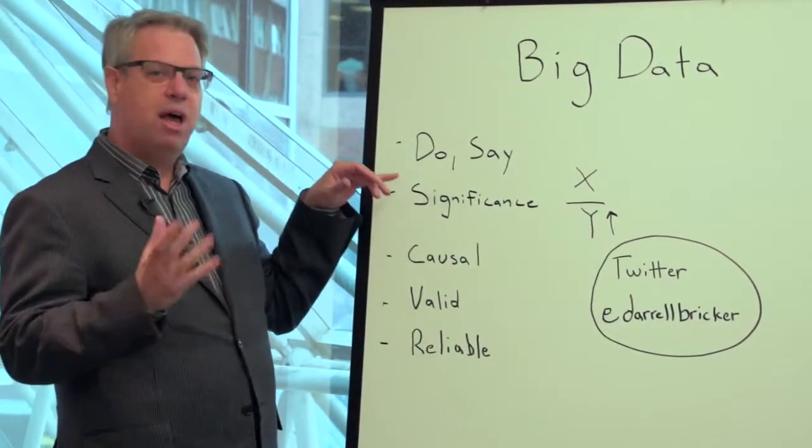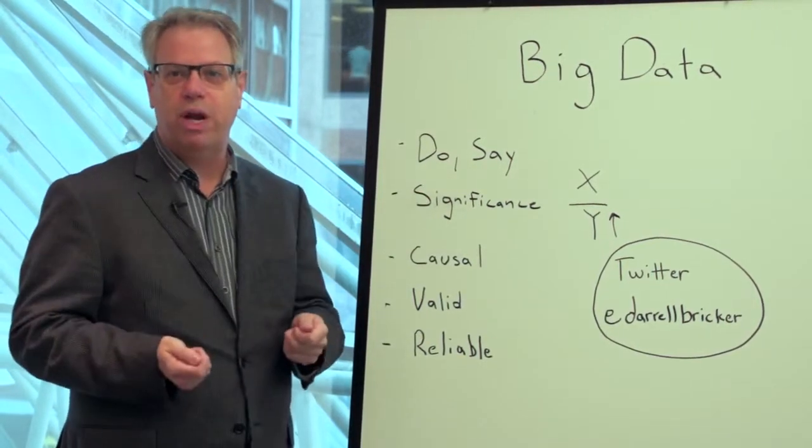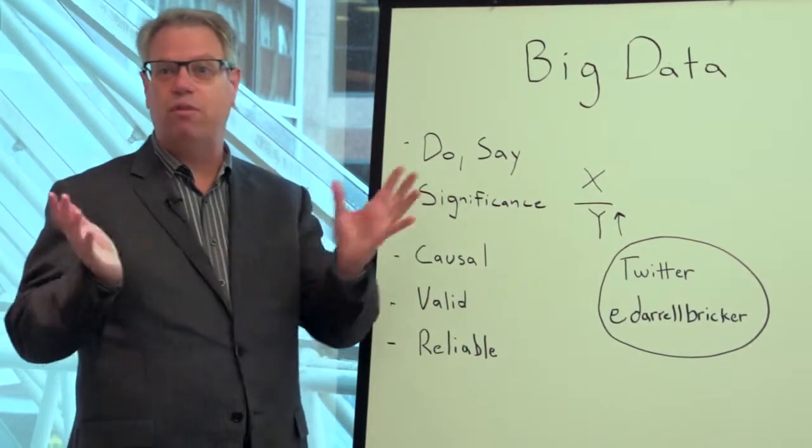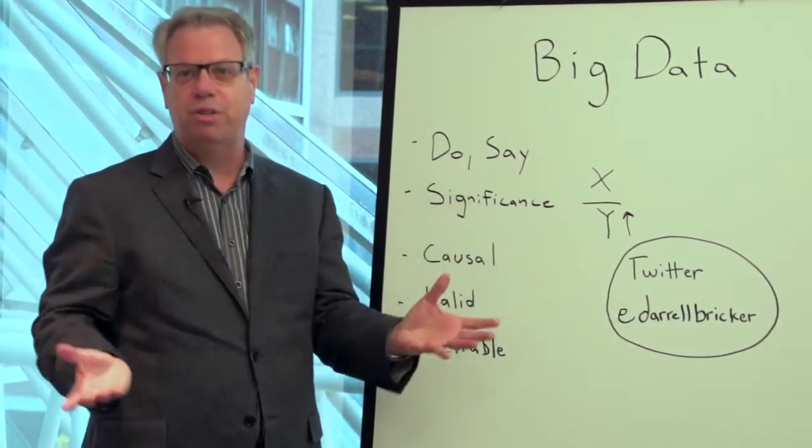And really a lot of that information is generally related to what people do. So what you do with your credit card, where you travel, all of this information is put together in databases all over the world and people can look at how certain groups of the population do certain things.